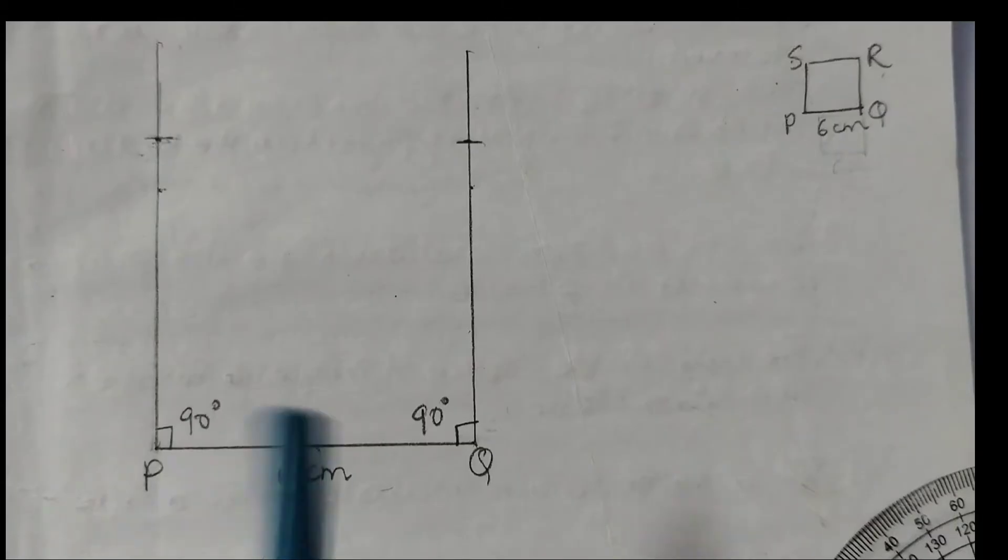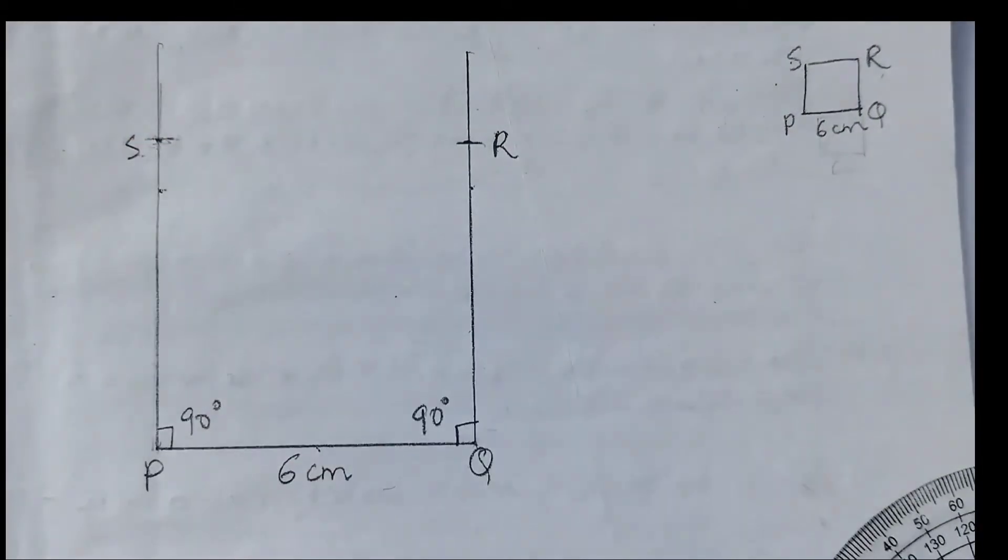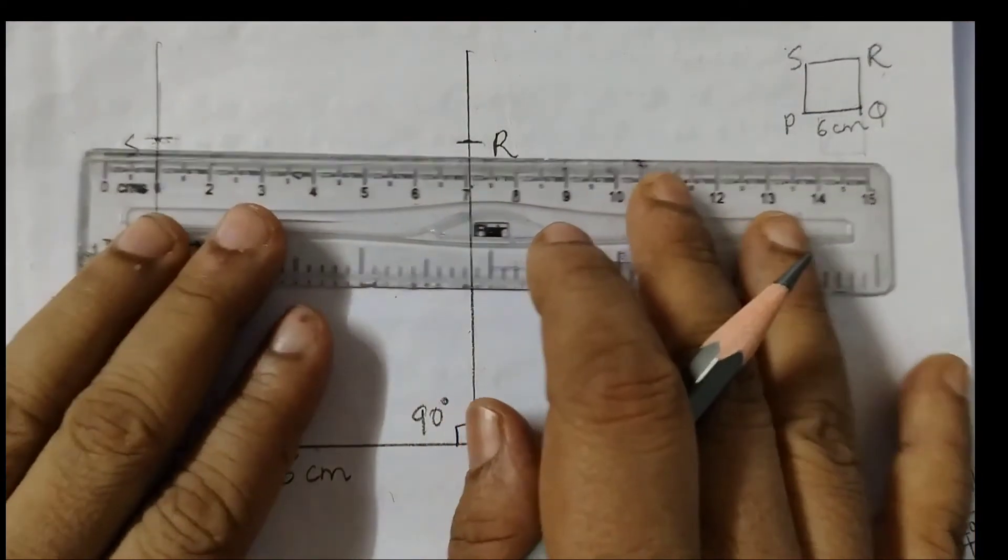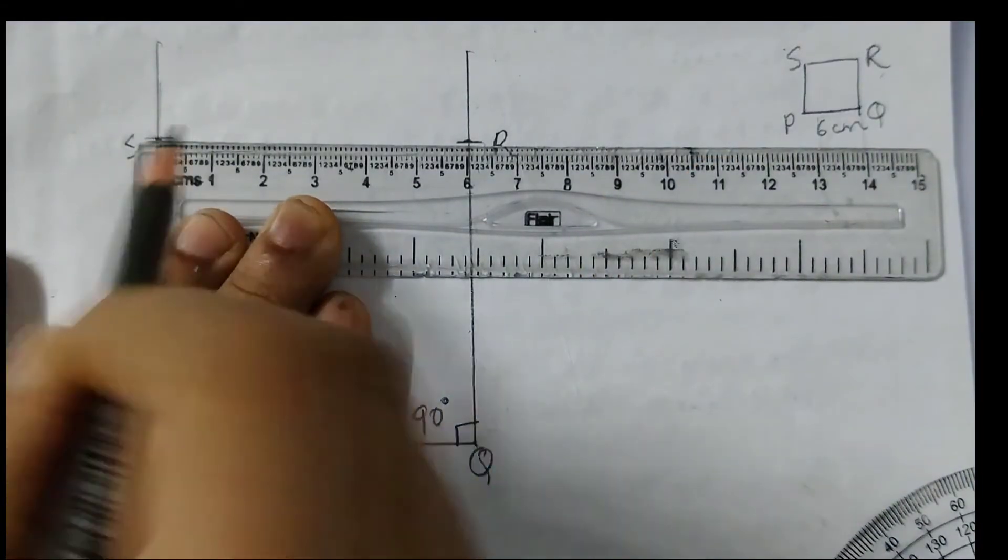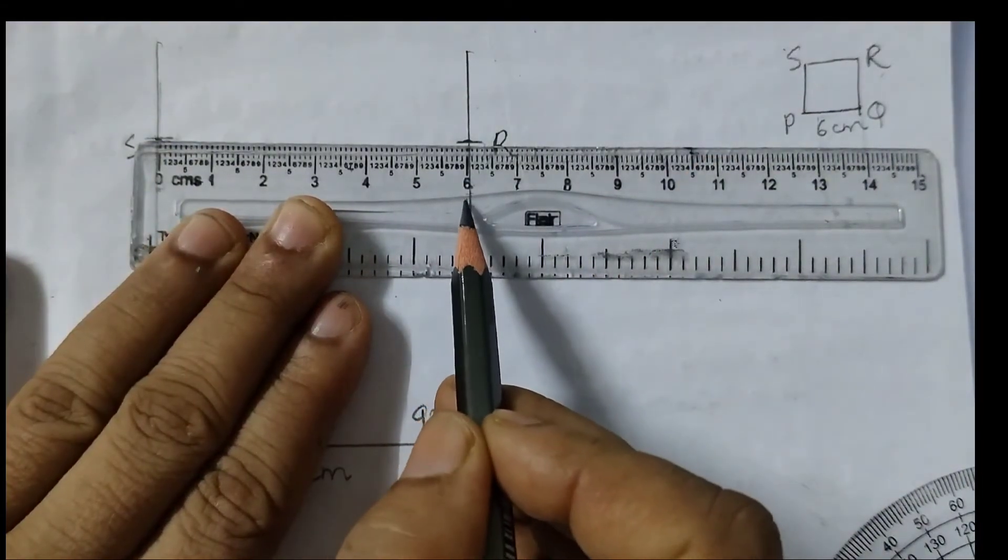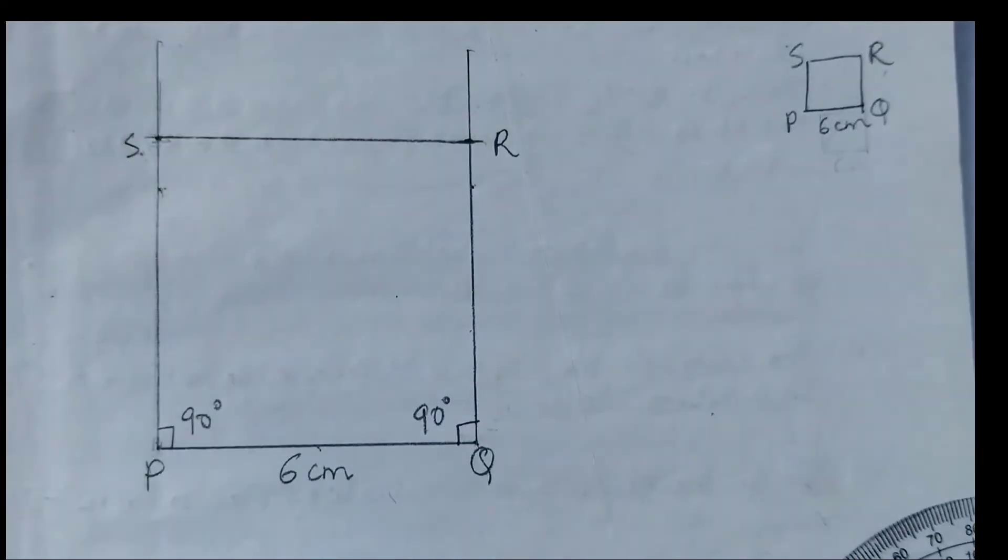Once done you can just label it as R S. And then join these two points. And see here this is also 6 cm. 0 and then this is 6.